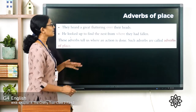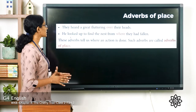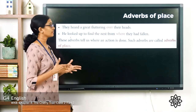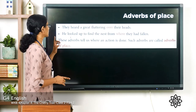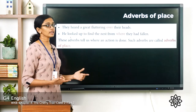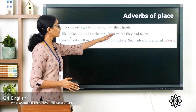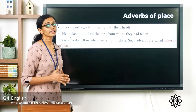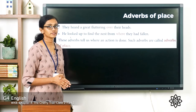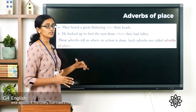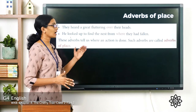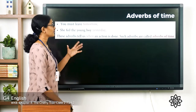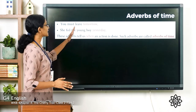Now we have adverbs of place. In 'they heard a great fluttering over their heads,' the word 'over' tells where. In 'he looked up to find the nest from where they had fallen,' the words 'over' and 'up' tell where the action is done — the place of its occurrence. Adverbs that show where an action is done are called adverbs of place.